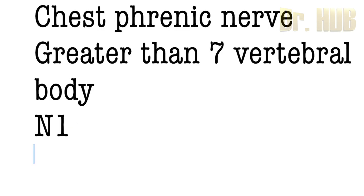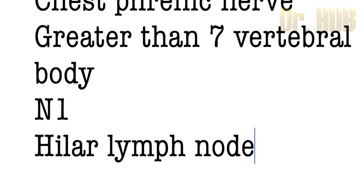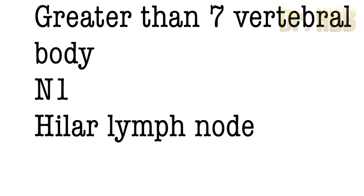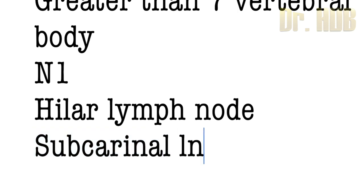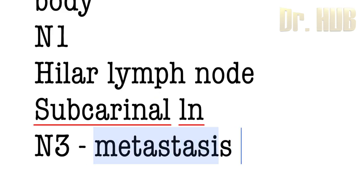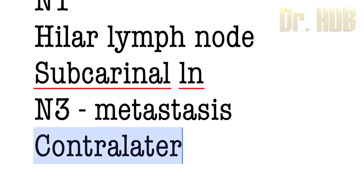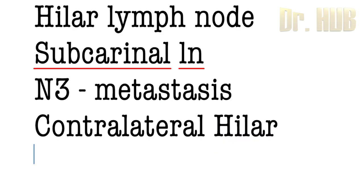N1 is metastasis in the ipsilateral peribronchial and hilar lymph nodes, including intrapulmonary nodes. N2 is metastasis in the ipsilateral mediastinum and subcarinal lymph nodes. N3 stands for metastasis in the contralateral mediastinal, contralateral hilar, and ipsilateral or contralateral scalene and supraclavicular lymph nodes.